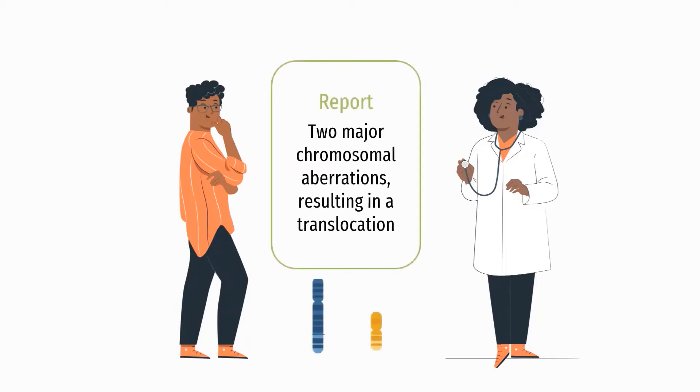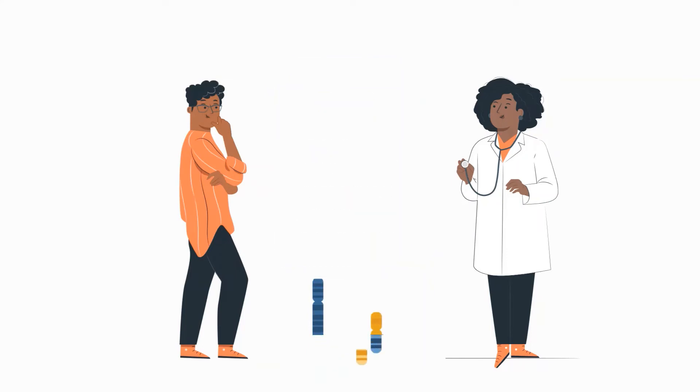The results indicate two major chromosomal aberrations resulting in a translocation and indicative that patient A's biopsy sample does contain cancerous tissue. Based on these results, Dr. B suggests a first-line therapy, but unfortunately, patient A's condition worsens.